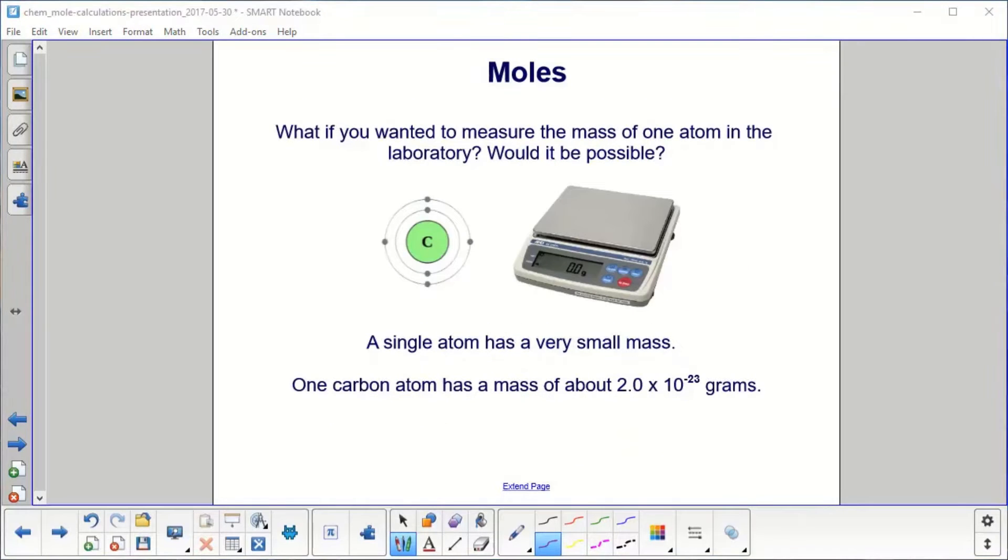What if you wanted to measure the mass of one atom in the laboratory? Would it be possible? Well, a single atom has a very small mass. One carbon atom has a mass of about 2.0 × 10^-23 grams. So there's no way you could put one on a scale and measure it. Nothing we have is that accurate or goes to that layer of detail.